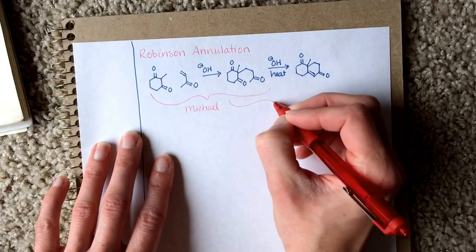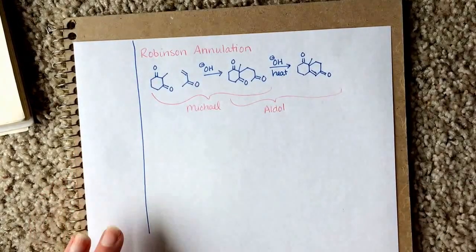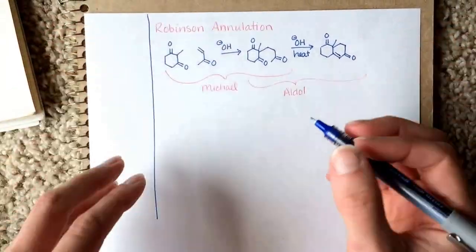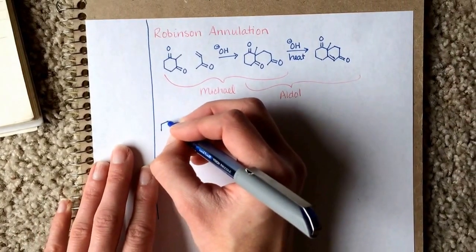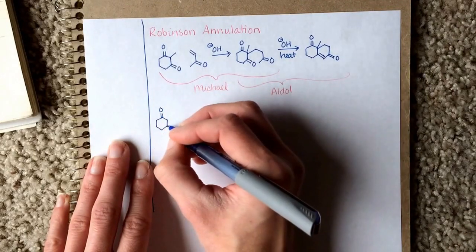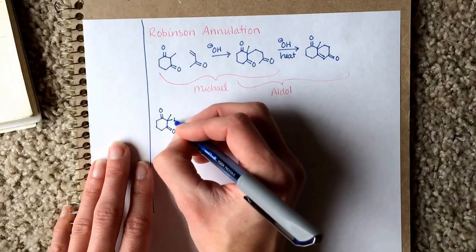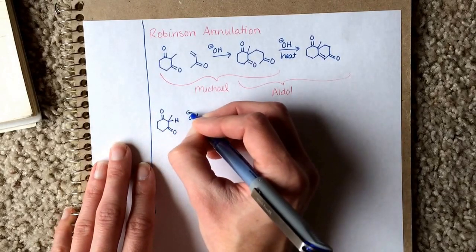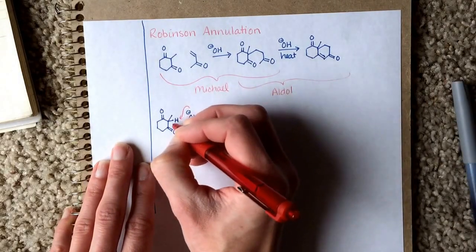And then this much of it is an aldol condensation reaction. We're going to look at the mechanism for just this specific Robinson annulation. In the scope of this particular class, we're only going to look at this reaction in one limited example. For the mechanism, first we're going to do the Michael addition, and the first thing that happens is formation of the enolate.